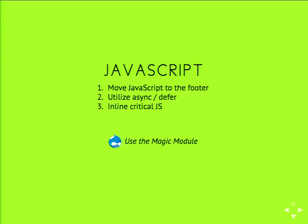To move JavaScript to the footer and use async and defer, the Magic module does all this magically. Enable it, click a single button, and all your JavaScript — including jQuery and your libraries — will be in the footer immediately. There's also an option to leave jQuery and some other Drupal core code in the header, which is required if you're using a WYSIWYG. If you're using CKEditor, it's not required anymore.